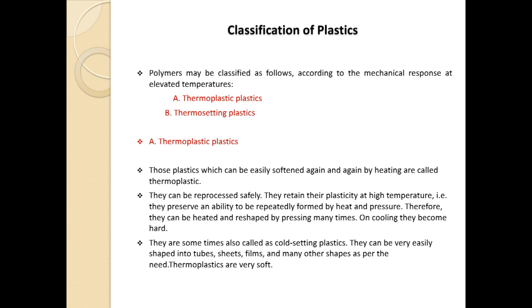Now we will see the classification of plastic. Plastics are broadly classified into two groups: thermoplastics and thermosetting plastics. Those plastics which can be easily softened again and again by heating are called thermoplastics. The major difference between thermoplastic and thermosetting plastic is that thermoplastic materials can be recycled again and again, but thermosetting plastics cannot. Both are long chain polymers made up of monomers.